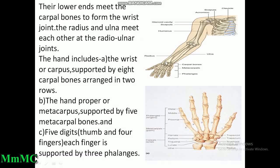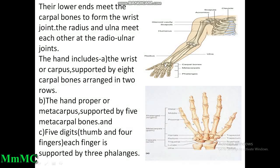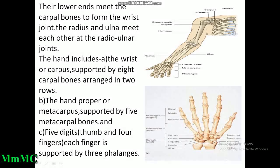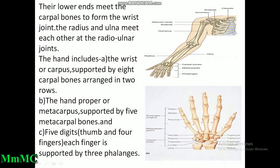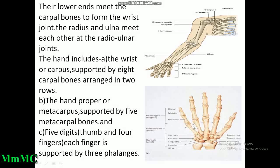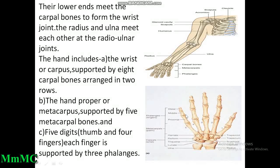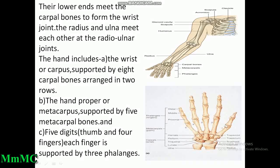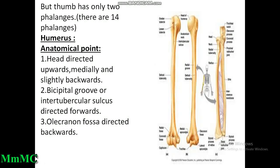At their lower end, the radius and ulna meet the carpal bones to form the wrist joint. The radius and ulna also meet each other at the radio-ulnar joint. The hand includes the wrist supported by eight carpal bones arranged in two rows, the metacarpus supported by five metacarpal bones, and five digits — thumb and four fingers. Each finger is supported by three phalanges, but the thumb has only two phalanges; total phalanges are 14 in number.